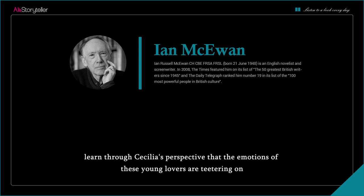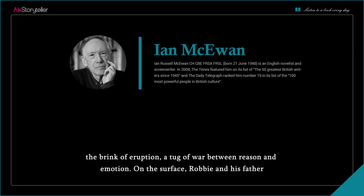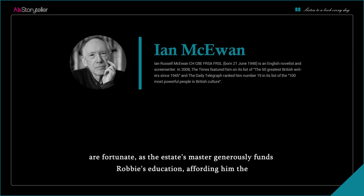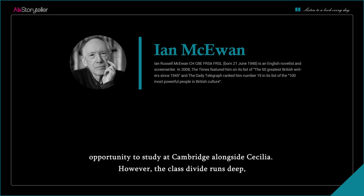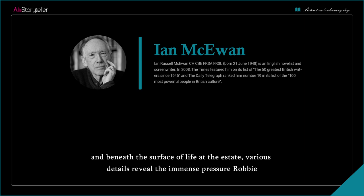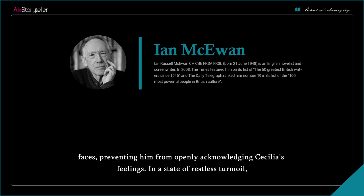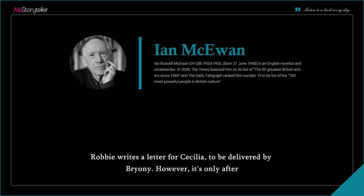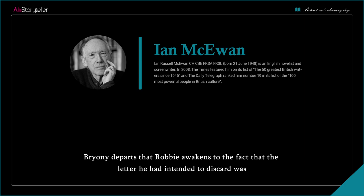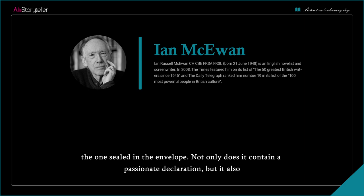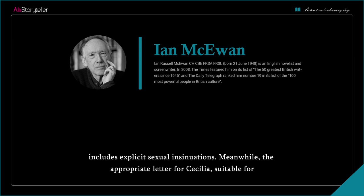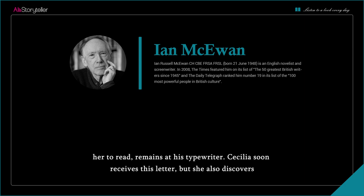We soon learn through Cecilia's perspective that the emotions of these young lovers are teetering on the brink of eruption — a tug of war between reason and emotion. On the surface, Robbie and his father are fortunate, as the estate's master generously funds Robbie's education, affording him the opportunity to study at Cambridge alongside Cecilia. However, the class divide runs deep, and various details reveal the immense pressure Robbie faces, preventing him from openly acknowledging Cecilia's feelings. In a state of restless turmoil, Robbie writes a letter for Cecilia, to be delivered by Bryony. However, it's only after Bryony departs that Robbie awakens to the fact that the letter he had intended to discard — containing a passionate declaration and explicit sexual insinuations — was the one sealed in the envelope, while the appropriate letter remains at his typewriter.